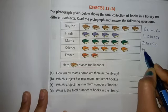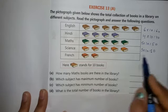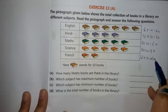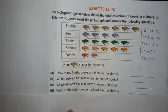Five multiply by ten equals fifty. And in the last, for French, two books are given, so two multiply by ten equals twenty. This is how you have to do every sum.